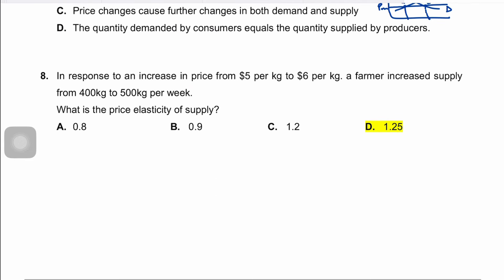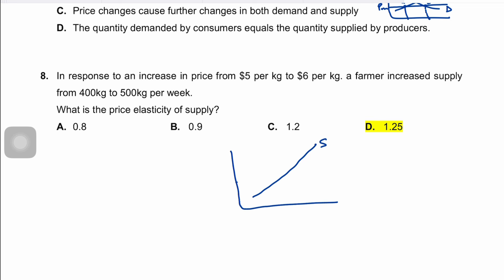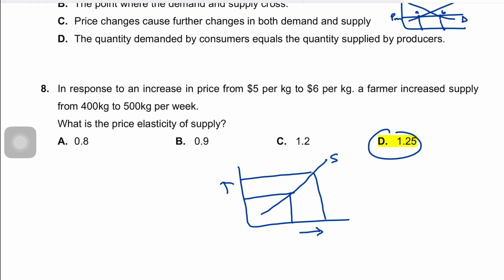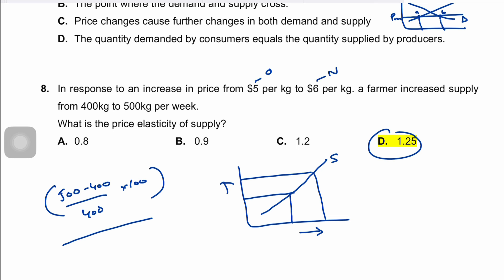Question eight: in response to a price increase from $5/kg to $6/kg, a farmer increased supply due to the law of supply. To calculate price elasticity of supply, the percentage change in quantity supplied is (500 − 400)/400 × 100, divided by the percentage change in price (6 − 5)/5 × 100. This gives a PES of positive 1.25, making D the correct answer.